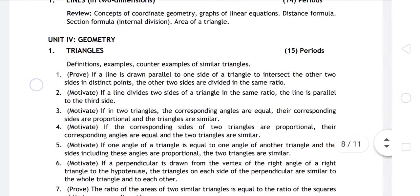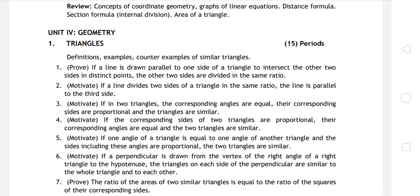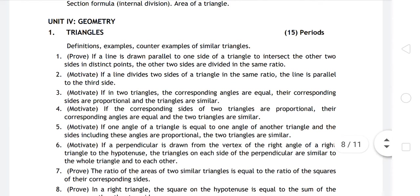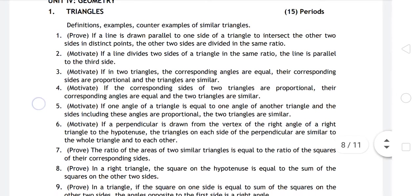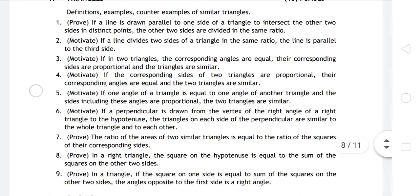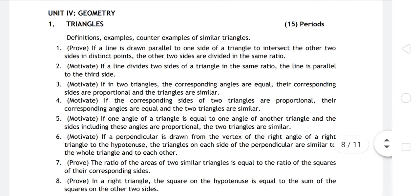Triangles chapter - Chapter 6 has theorems from 6.1 to 6.9. Some theorems have proofs, like theorem 6.1 you have to prove, then theorem 6.2, 6.3, 6.4, 6.5. Theorem 6.6 has only statement.